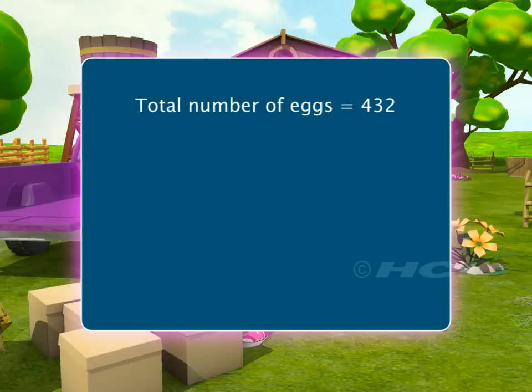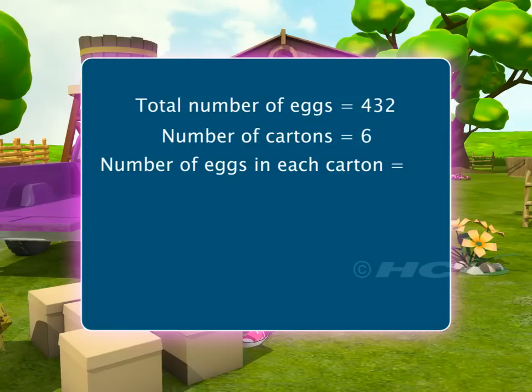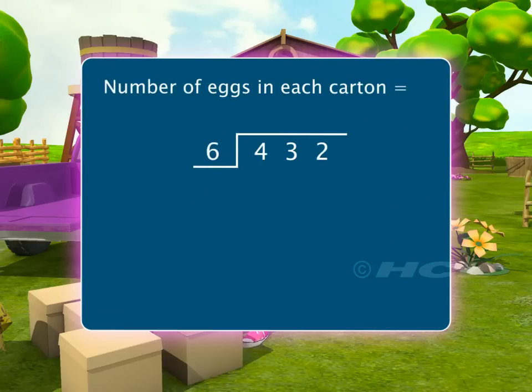Total number of eggs is equal to 432. Number of cartons is equal to 6. So, the number of eggs in each carton is equal to 432 divided by 6. 4 is less than 6. So, we cannot divide 4 by 6.